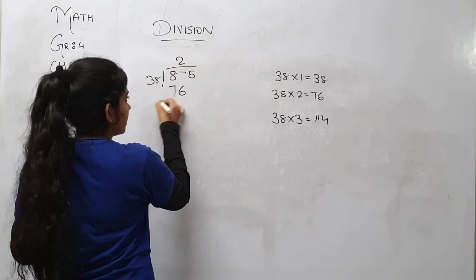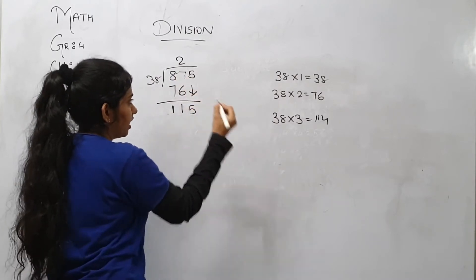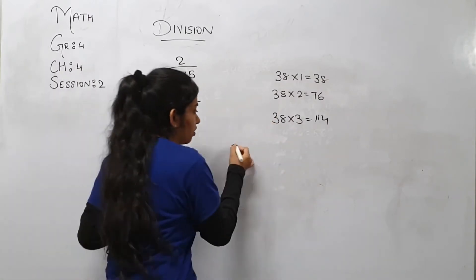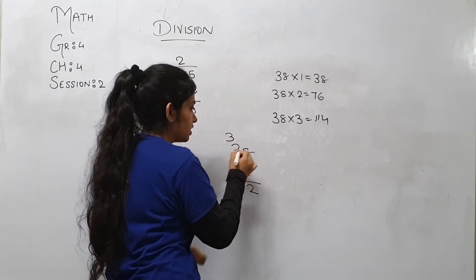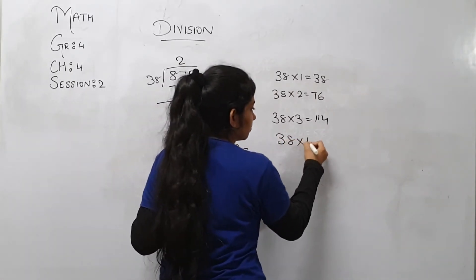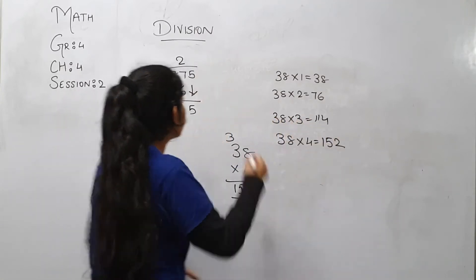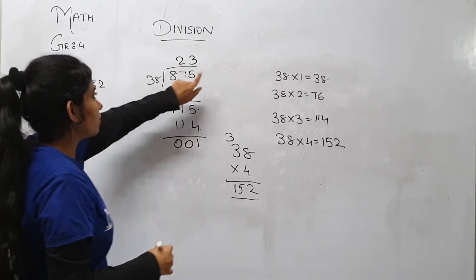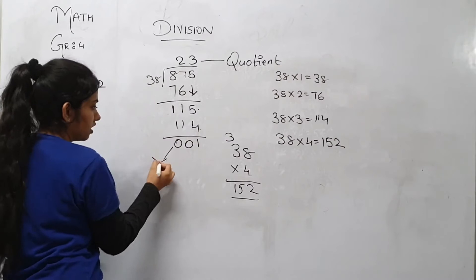38 threes are 114. 38 fours — 8 fours are 32, carry 3; 3 fours are 12 plus 3, that is 15. So 38 fours are 152, which is greater than 115. So we will take 38 threes, that is 114. 5 minus 4 is 1, 1 minus 1 is 0, 1 minus 1 is 0. So we got the quotient as 23 and the remainder is 1.